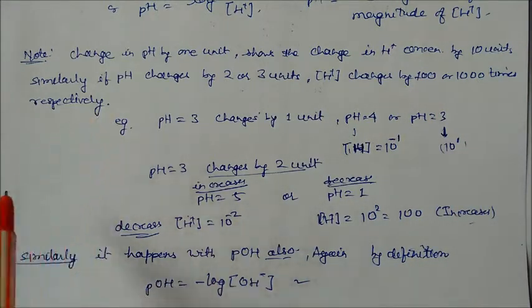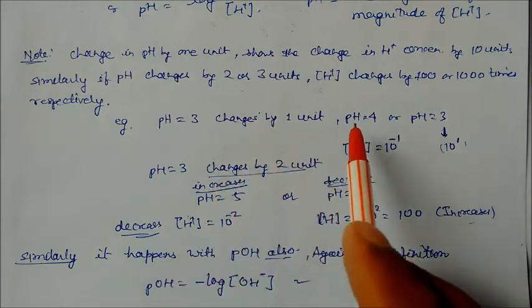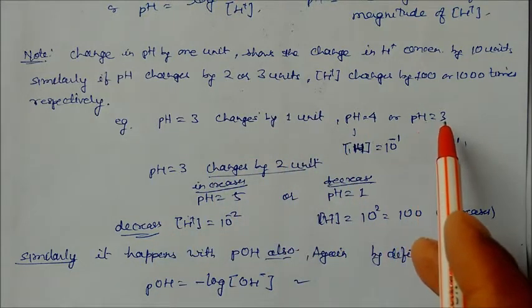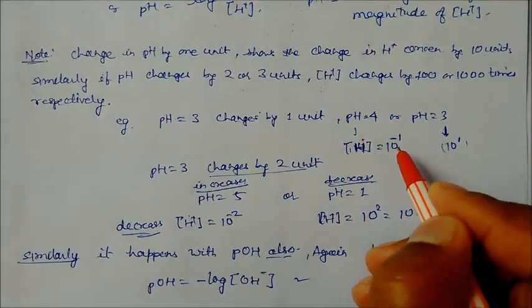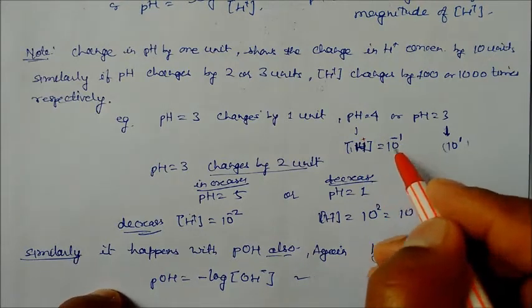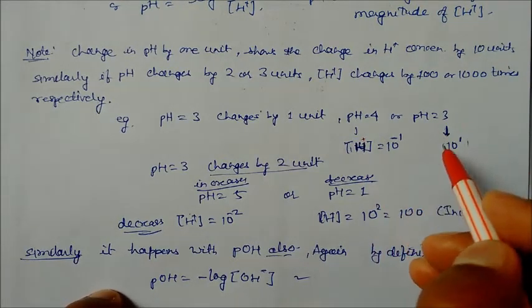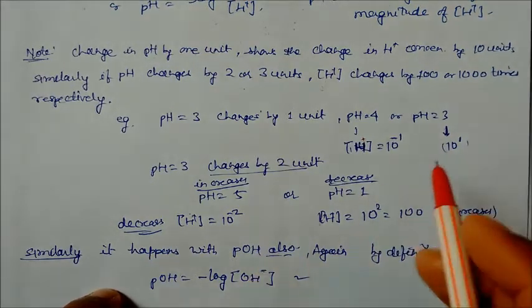For example, suppose pH = 3. If it is changing by 1 unit, like it becomes 3 to 4, then if pH is 4, the concentration of H+ will be 10^-4, means 10 times decreasing. And in case of pH = 4, it becomes 10^-4, means 10 times increasing from pH 3.